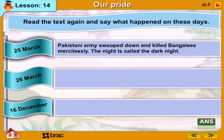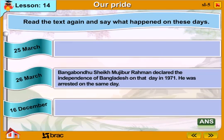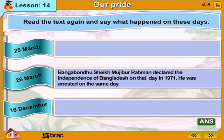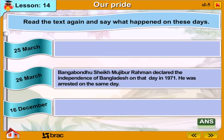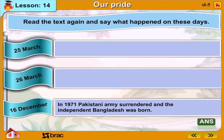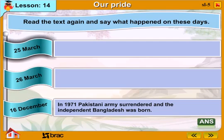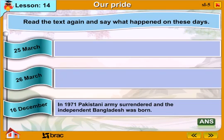25th March: The Pakistani army swooped down and killed Bengalis mercilessly. The night is called the Dark Night. 26th March: Bangabandhu Sheikh Mujibur Rahman declared the independence of Bangladesh on that day in 1971. He was arrested on the same day. 16th December: In 1971, the Pakistani army surrendered and independent Bangladesh was born.